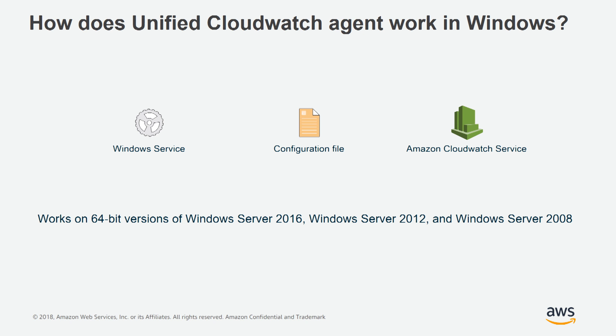How does Unified CloudWatch Agent work in Windows? After you install Unified CloudWatch Agent in Windows, it creates a Windows service. This Windows service reads the configuration file and, based on that, it sends the metrics or logs to the CloudWatch service. Please also note that this service works on 64-bit versions of Windows 2016, 2012, and 2008.